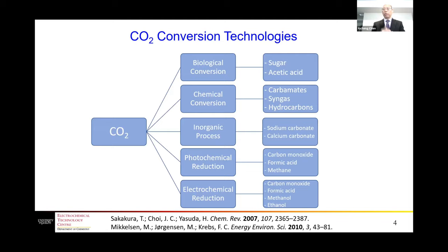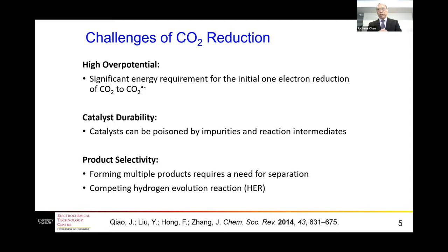There are some challenges for the electrochemical reduction of carbon dioxide. Since CO2 is very stable, we can list three overall challenges. First, it has a high overpotential, requiring high energy for the electrochemical reduction of carbon dioxide. As a result, we do need a good catalyst for the process.